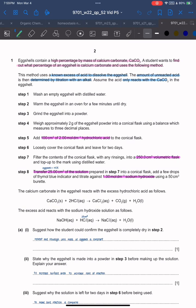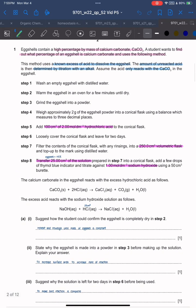Step 1: Wash empty eggshell with distilled water. Step 2: Warm the eggshell in an oven for a few minutes until dry. Step 3: Grind the eggshell into powder.